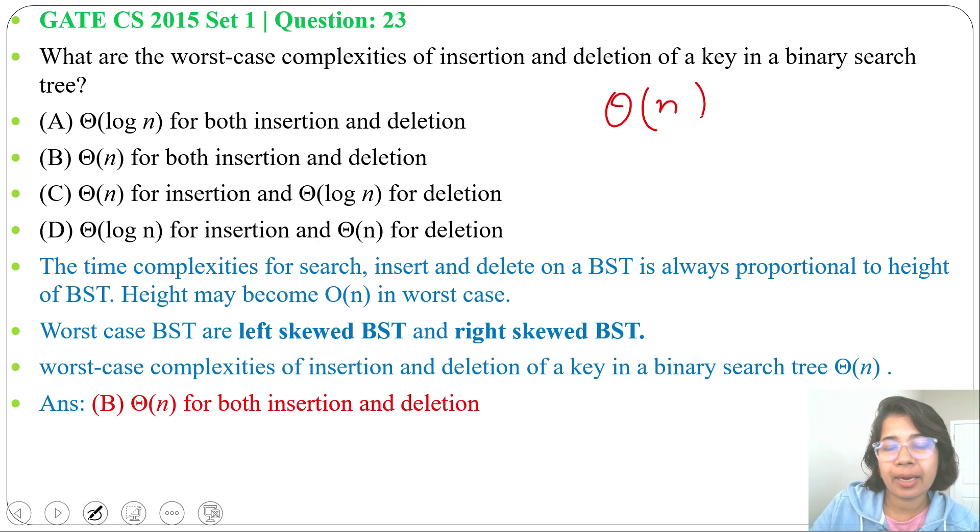But in case of AVL, height is balanced, their searching and insertion running time is theta of log n. But as BST height is not balanced, so it is theta of n in worst case.